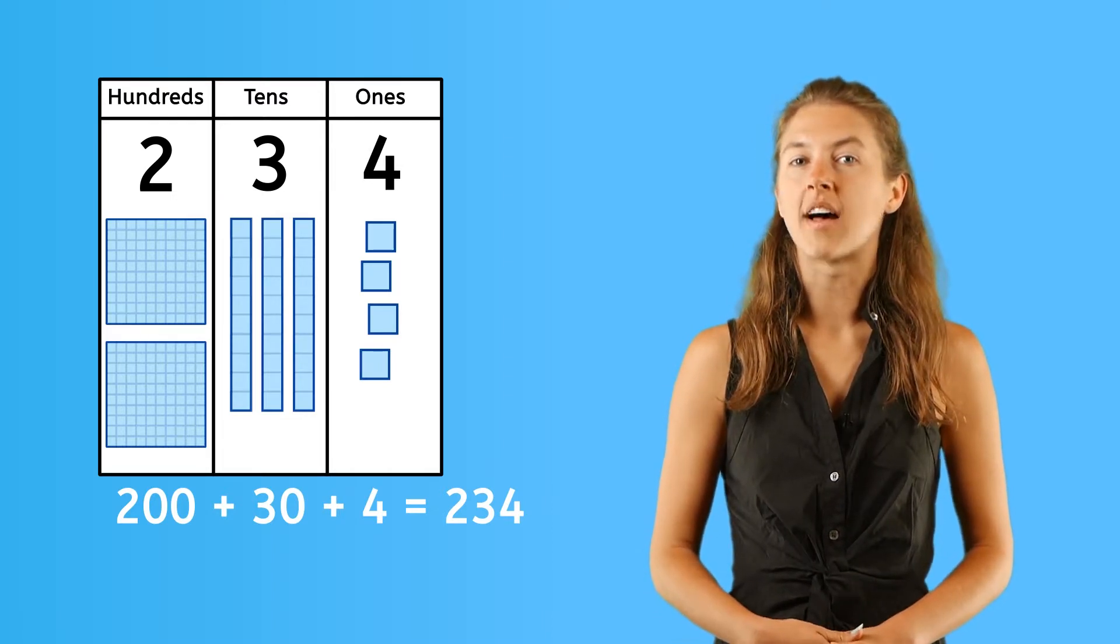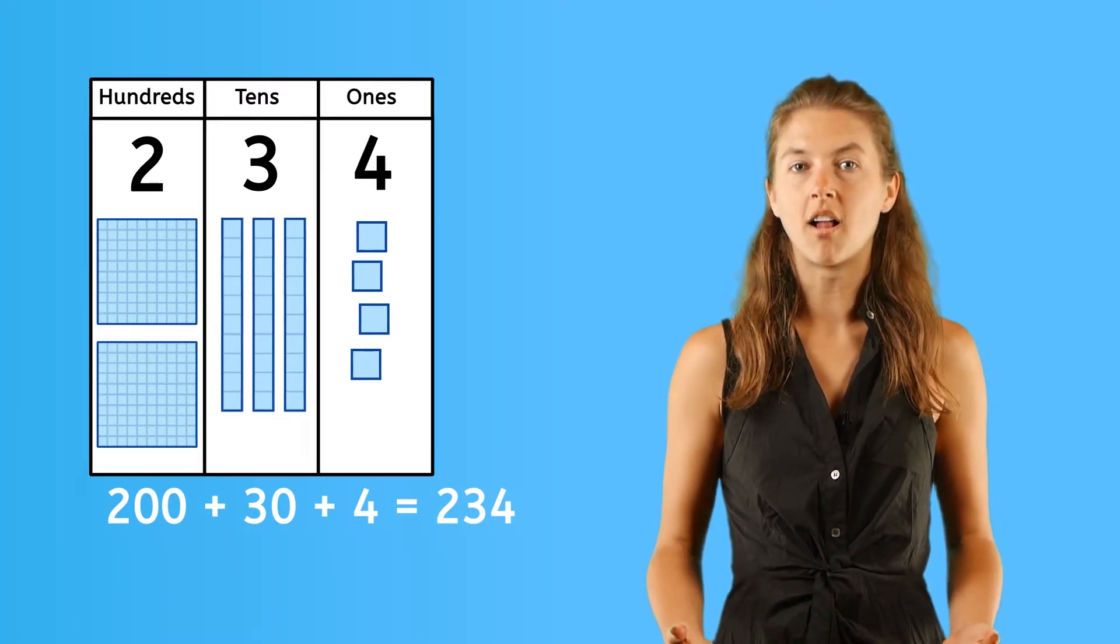We can figure out place value without a place value chart at all. In fact, everyday numbers are not actually sitting on a place value chart, but we know each digit has a different value just the same.